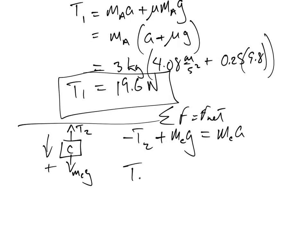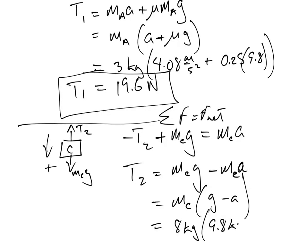And to solve for T2, that's just going to be mC g minus mC a. Factor out mC times g minus a. And we're left with 8 kilos times 9.8 meters per second squared minus 4.08 we calculated before.